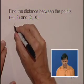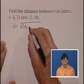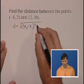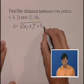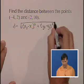The formula for distance is the square root of x2 minus x1 squared plus y2 minus y1 quantity squared, and we'll take the square root of all of that.